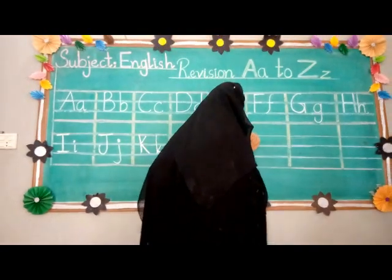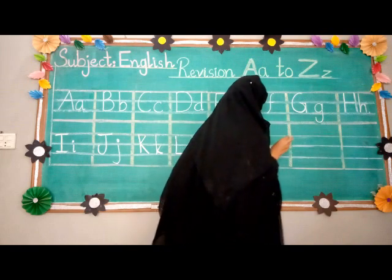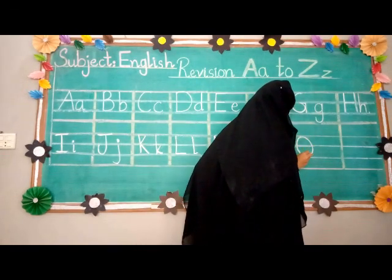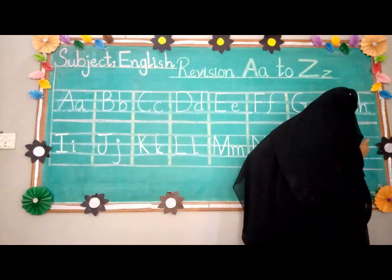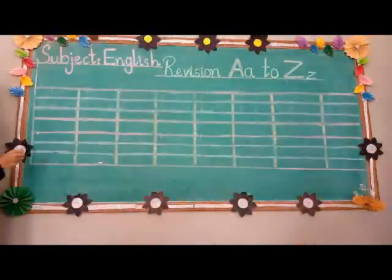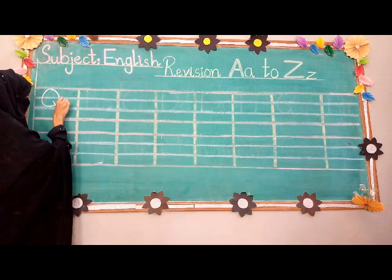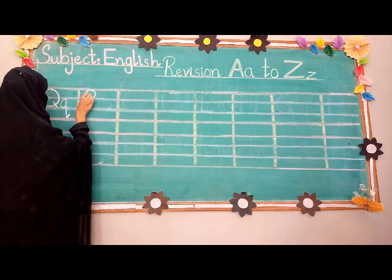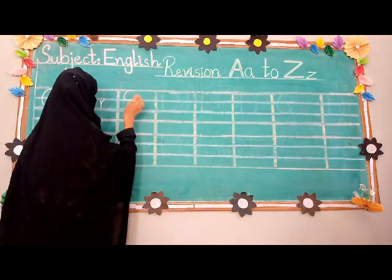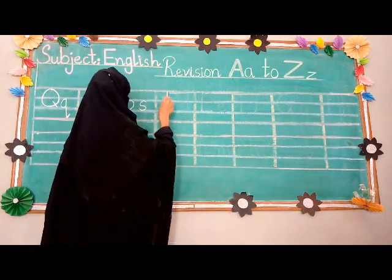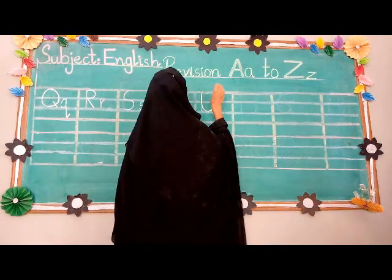The name is N, and the sound is N. The name is O, and the sound is O. The name is P, and the sound is P. The name is Q, and the sound is Q. The name is R. The name is S. The name is T, and the sound is T. The name is U, and the sound is U.